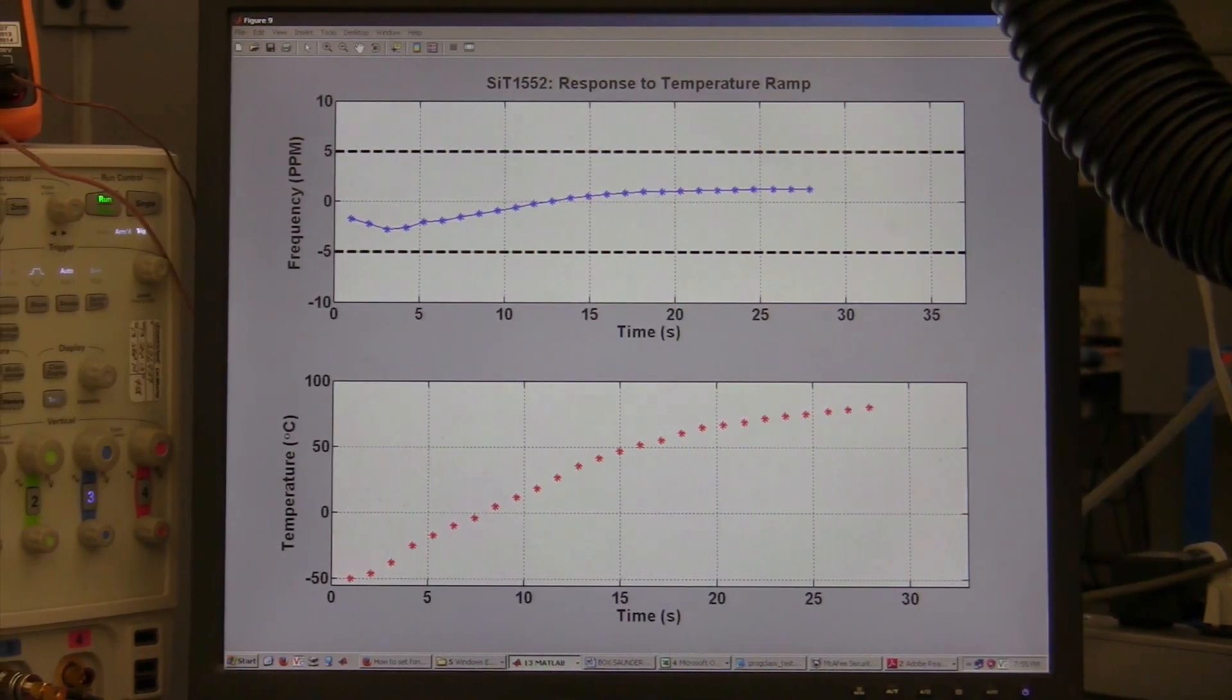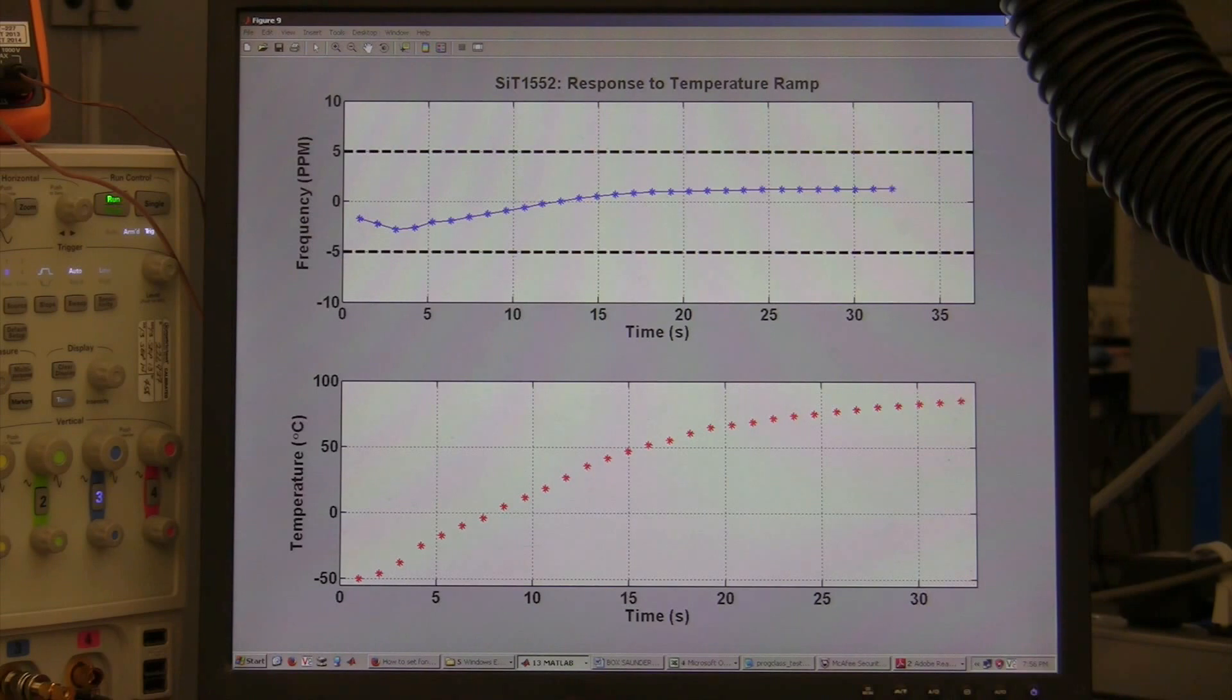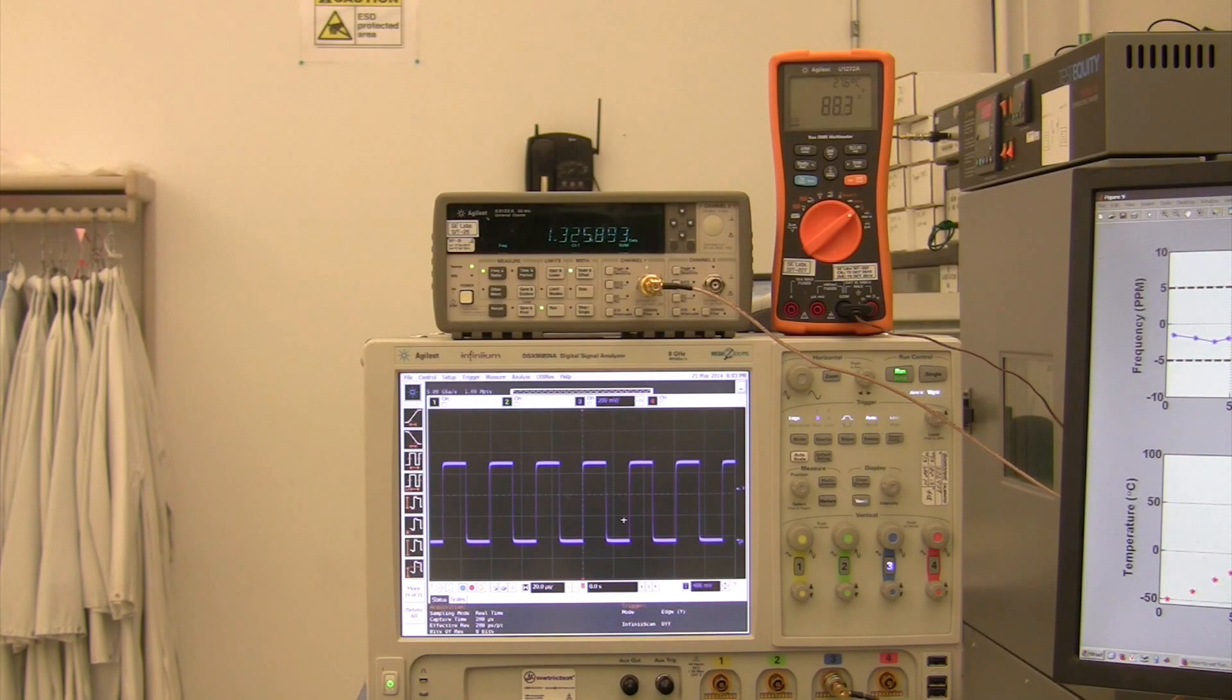As you can see from the frequency stability plot over temperature, the SIT1552 TCXO maintains frequency stability well under its plus or minus 5 ppm spec limit.